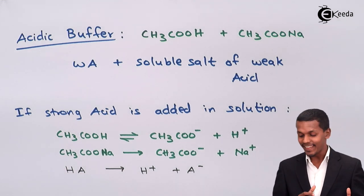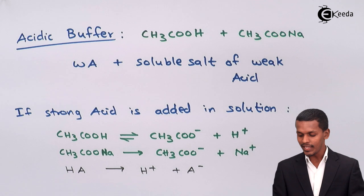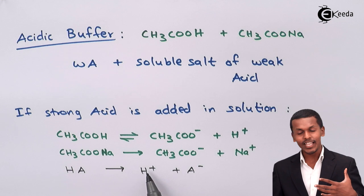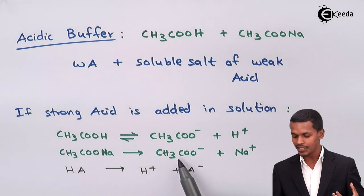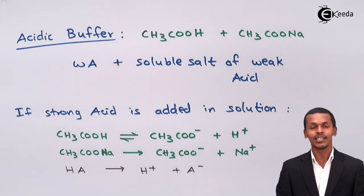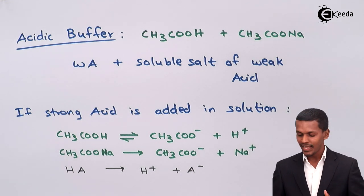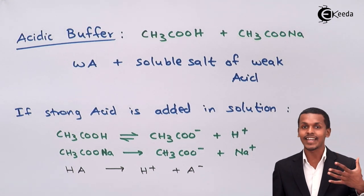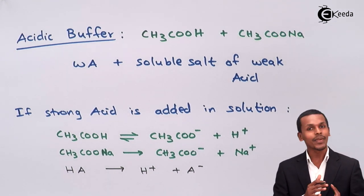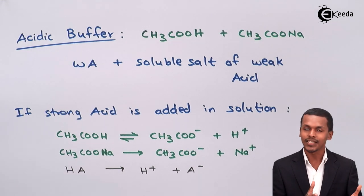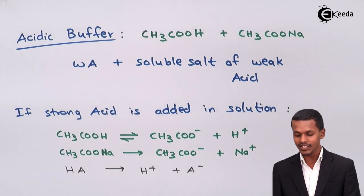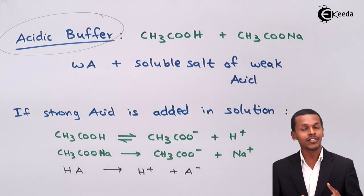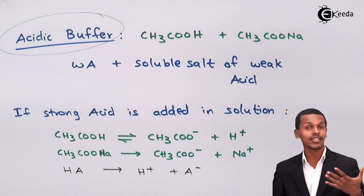Since the H⁺ ions are consumed by CH3COO⁻, there is no net increase in H⁺ concentration and the pH remains almost the same. This property, where the H⁺ ions are consumed by CH3COO⁻, is known as reserved basicity. This is the mechanism of the acidic buffer when a strong acid is added. Now let us talk about what happens when a strong base is added.